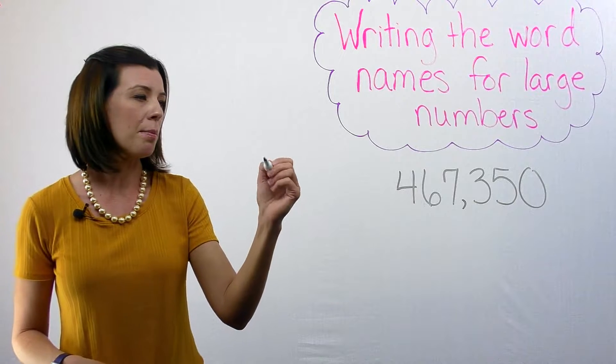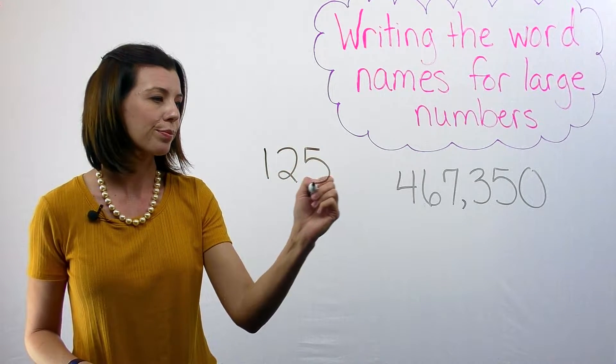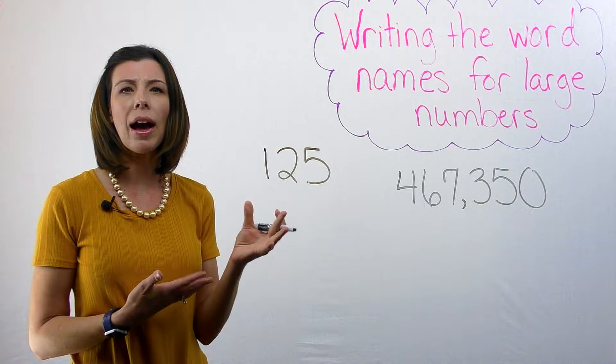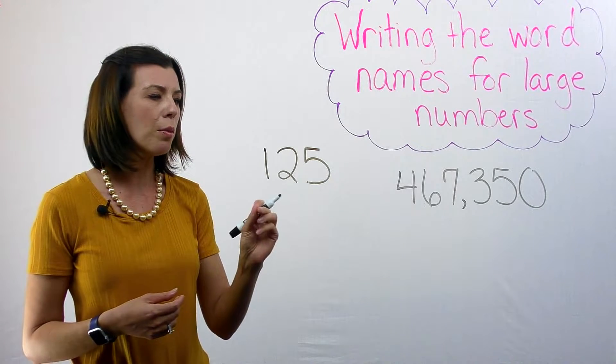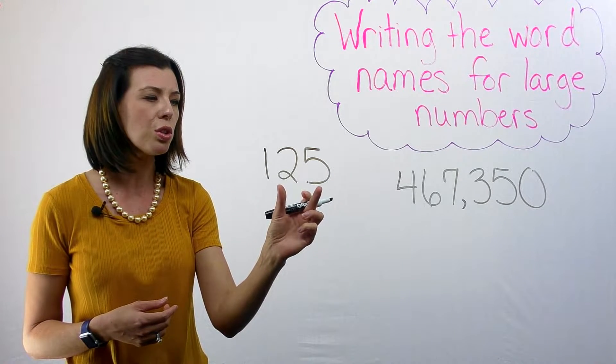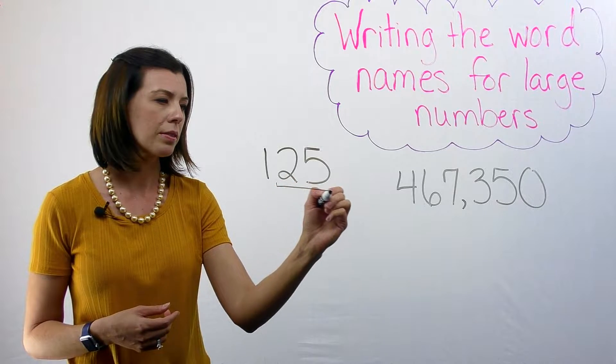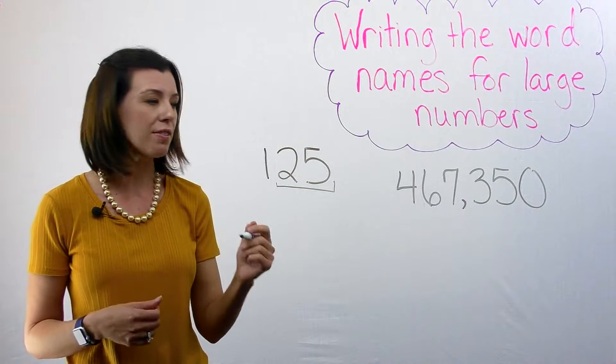So let's take the number, let's take this number right here. And when I think about how to write the word name for this, I want to start with these last two numbers here. And I know that this number is 25.